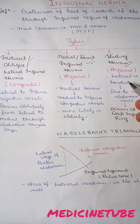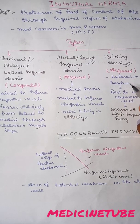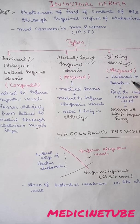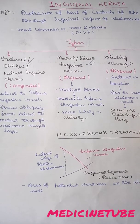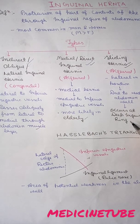Now, sliding hernia. Sliding hernia is always acquired and lateral in position. So if a hernia is lateral in position and acquired, we should suspect sliding hernia. The main reason is weakening of the abdominal wall, which always occurs at the deep inguinal ring.